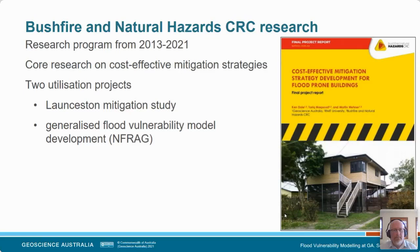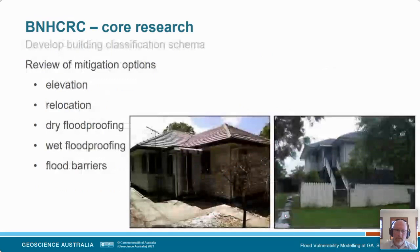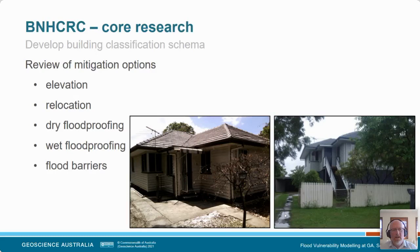With the core research, the first thing we did was develop a building classification schema — rather than looking at the house as a whole, we broke it up into components that could be separately defined. You can see there are a number of different attributes that could be used to categorize those. The next step was to review the available mitigation options, looking at residential buildings only. We have here a pretty clear example of elevation — this building was in South East Queensland, was flooded in 2011, and when we went back in 2013, you can see it has been elevated, which is a very appropriate type of mitigation option for that particular building type, though it's not appropriate for all types.